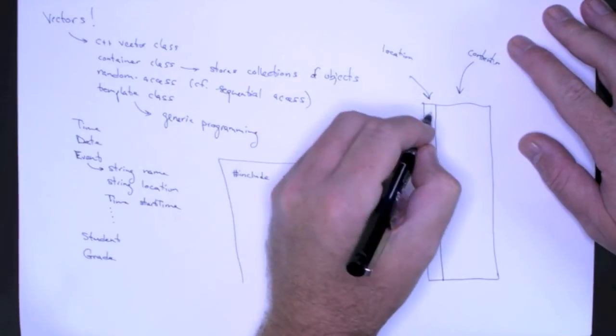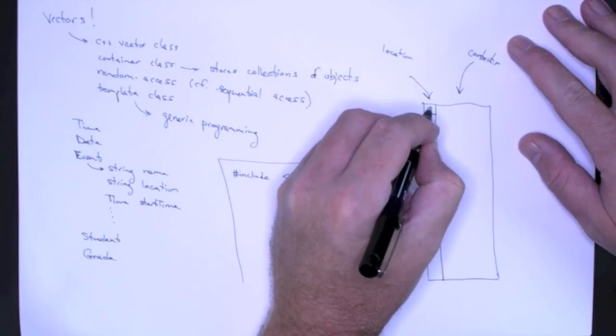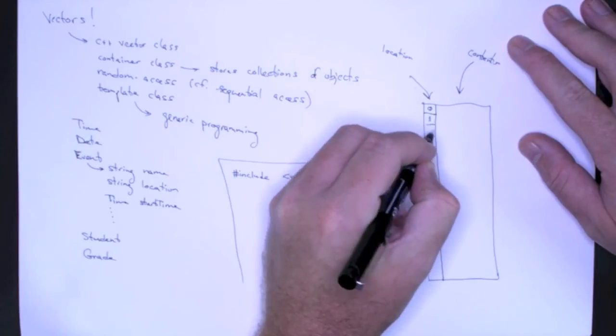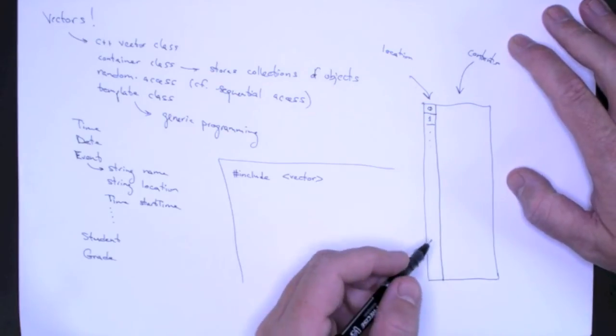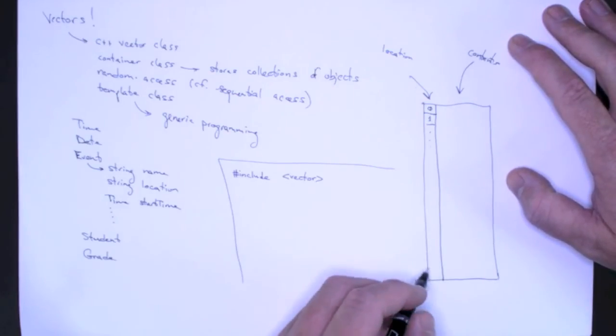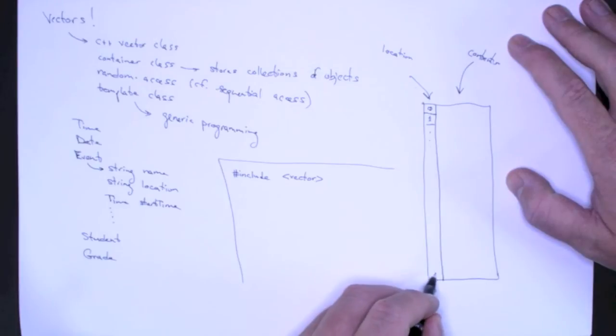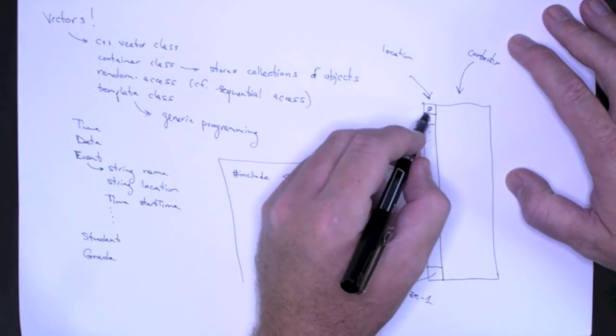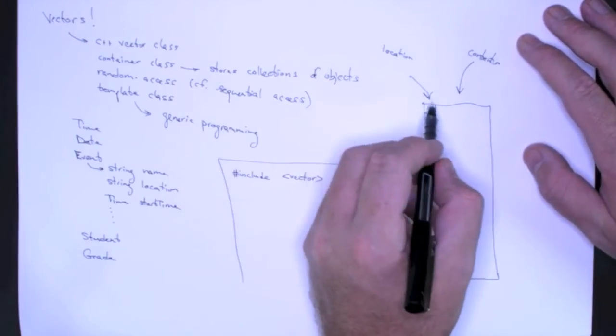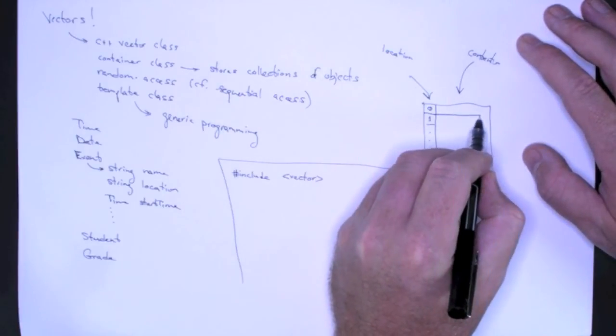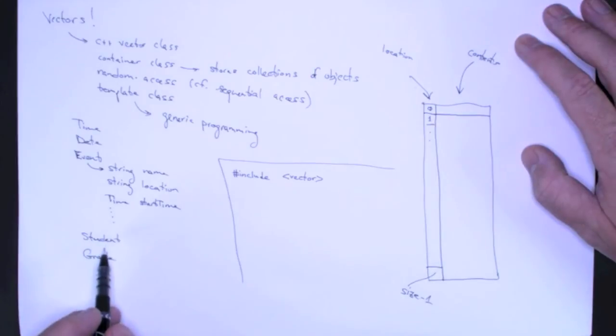And the locations are simply numbered starting at zero and one and two, and it depends on how many things we are actually storing in our vector. But this vector will have some size. So this location here is size minus one. And the reason it's size minus one is because we start at zero. And then in each location, we can store some sort of object.